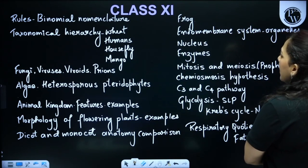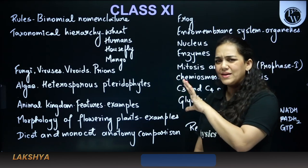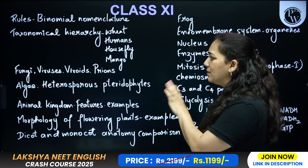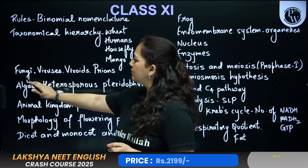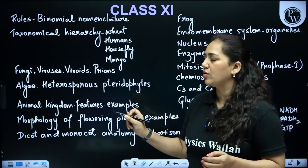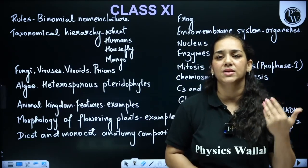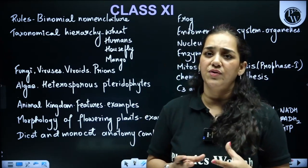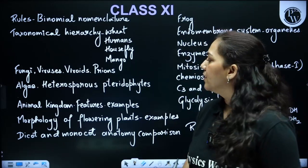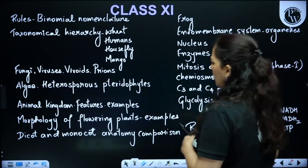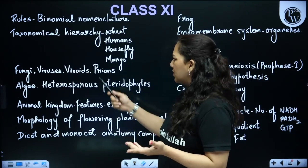In the Living World chapter: rules of binomial nomenclature and taxonomical hierarchy of wheat, humans, housefly, and mango — repeated questions come from this tabular data. In Biological Classification, fungi and viruses, viroids, and prions are important. A lot of questions have been asked on fungi, including life cycle features, group characteristics, and steps in sexual reproduction. Questions on viroids and prions are simple and straightforward.